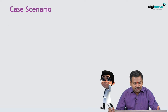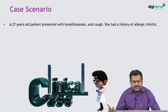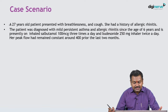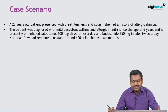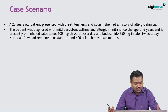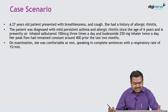Let's begin with the case scenario. We have a 27-year-old patient who comes with breathlessness and cough. She had a history of allergic rhinitis and at the age of 6 was diagnosed with mild persistent asthma and allergic rhinitis. She is presently on inhaled salbutamol 100 micrograms three times daily and budesonide 250 milligrams inhaler twice a day.